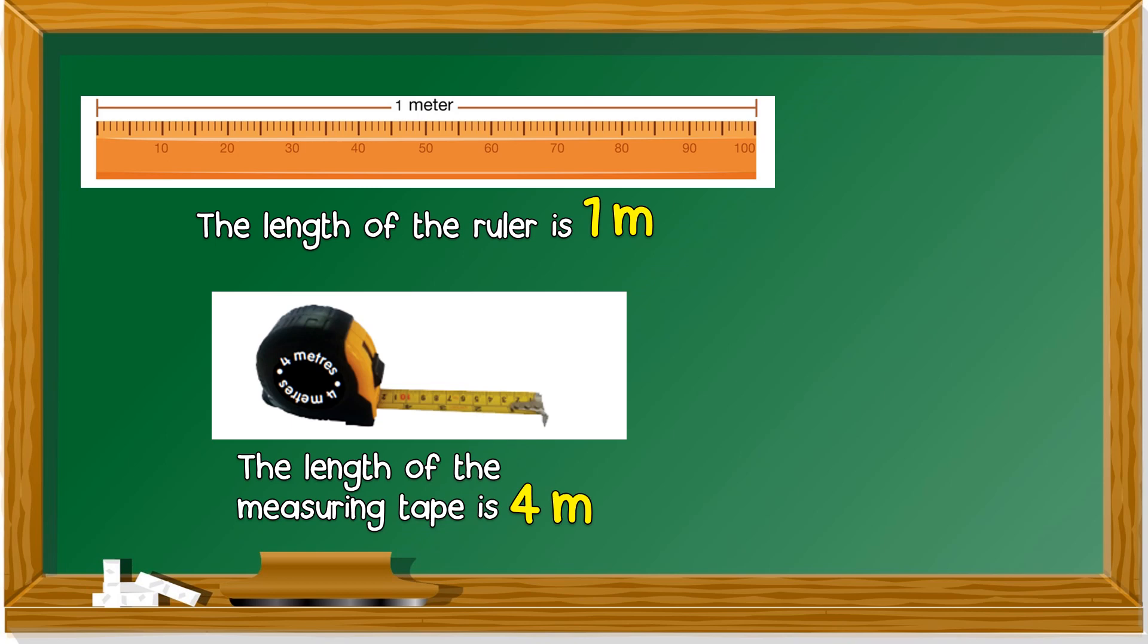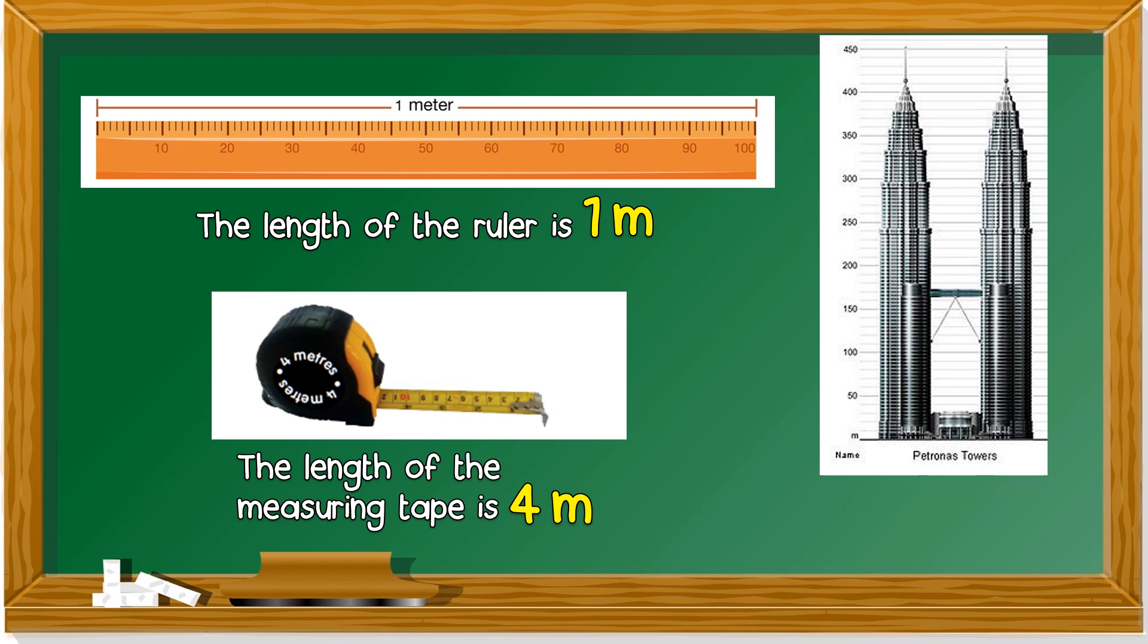Easy. Next one. Petronas Towers. The height of the towers is 450 M, which means 450 meter.